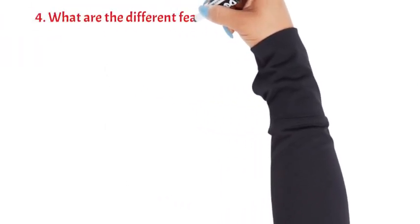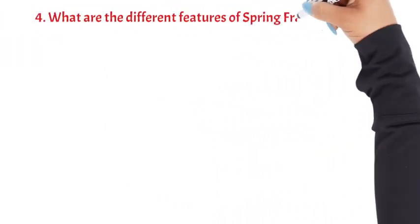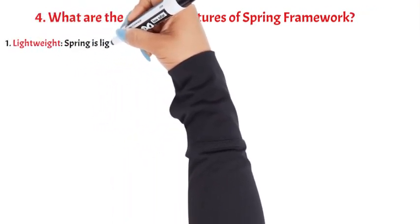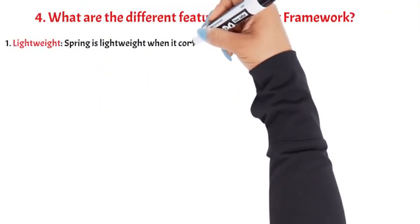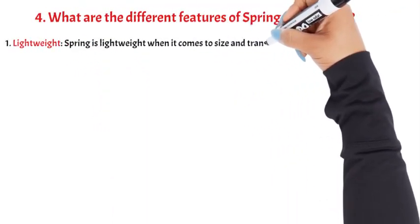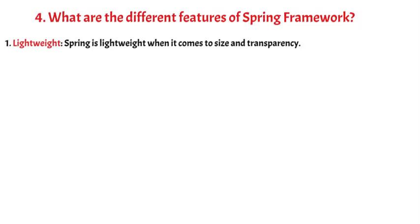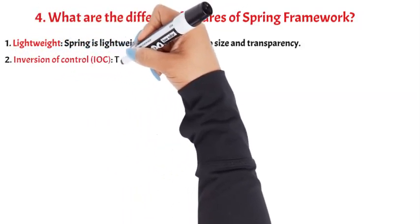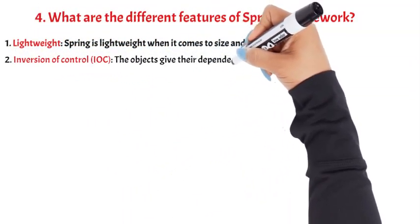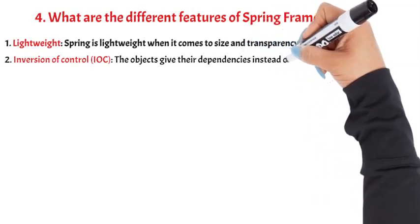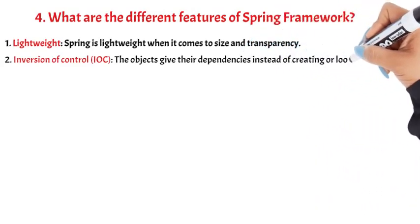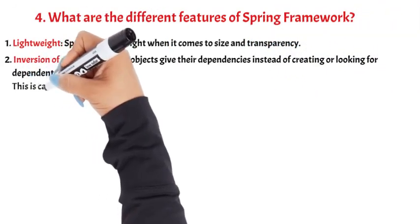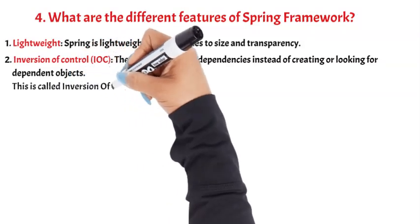Question 4: What are the different features of Spring Framework? 1. Lightweight: Spring is lightweight when it comes to size and transparency. 2. Inversion of Control (IOC): The objects give their dependencies instead of creating or looking for dependent objects. This is called inversion of control.